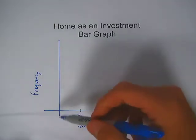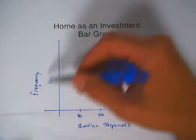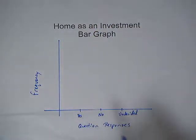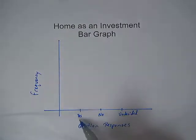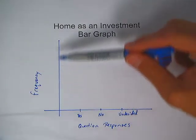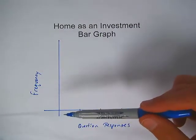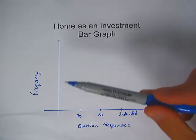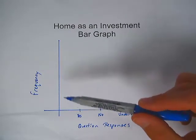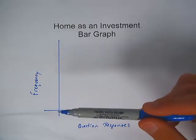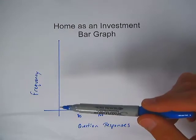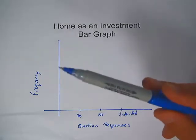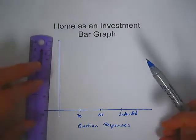To label the y-axis for frequency, I need to think about which response had the highest frequency. That was the yes response, which had a frequency of 540. So we need to go up to at least 540. We also need to consider what scale to use — counting by hundreds, starting at zero and going up to 600, would work well.